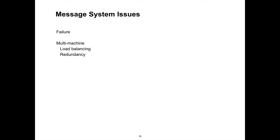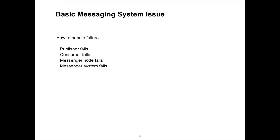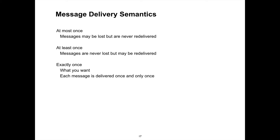In distributed systems with a messaging system for multiple machines, failure is a problem. What happens when an event occurs and the queue is full? If we're on multiple machines, how do you make sure one machine isn't doing all the work? There are issues of what happens when a publisher fails, or a consumer fails, and keeping track of those failures.